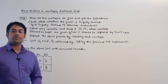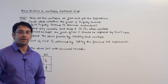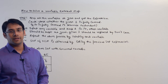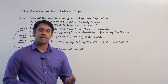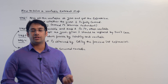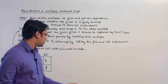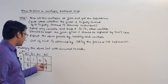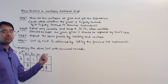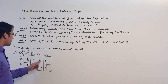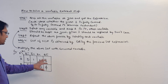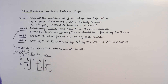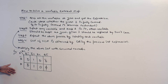Now let us see how to solve a variable entrant K-map. We will start with solving the variable entrant K-map containing only one variable in the entrant, and then we will solve the variable entrant K-map where we may have more than one variable inside the K-map. Let us read the procedure first.